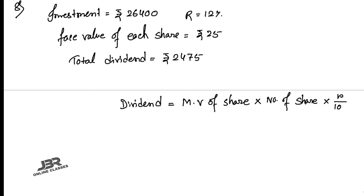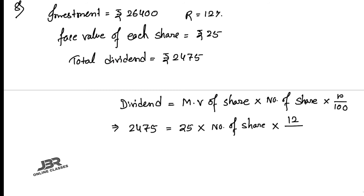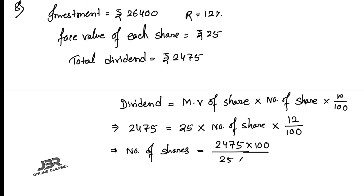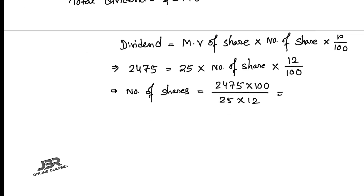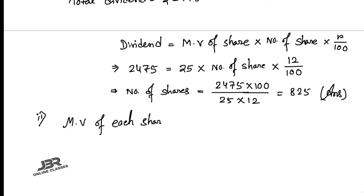Substituting: 2475 = 25 × number of shares × 12/100. Number of shares = (2475 × 100) ÷ (25 × 12) = 825. That is your first answer. Market value of each share = total investment ÷ number of shares = 26,400 ÷ 825 = ₹32. That is your second answer.